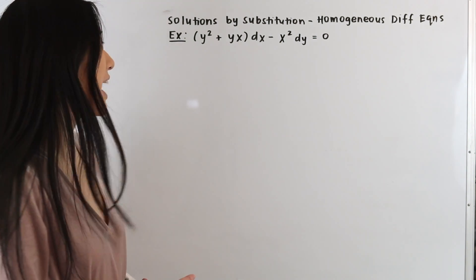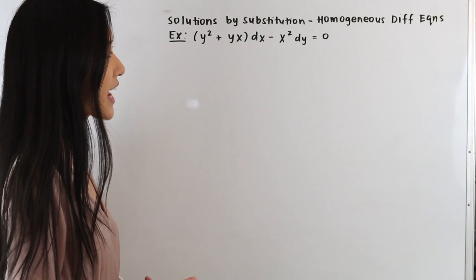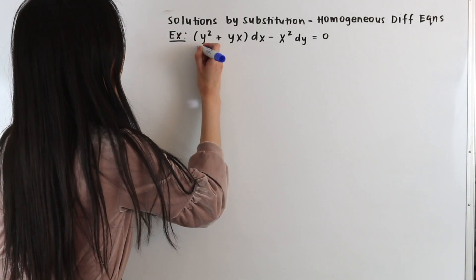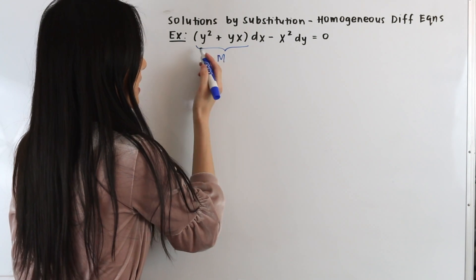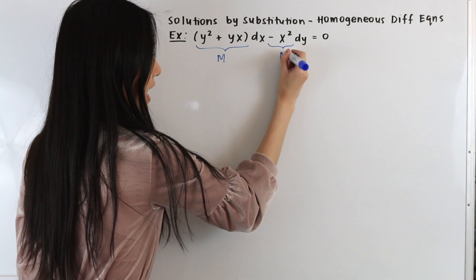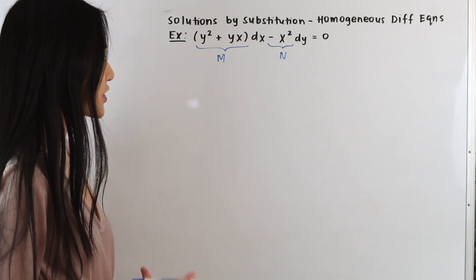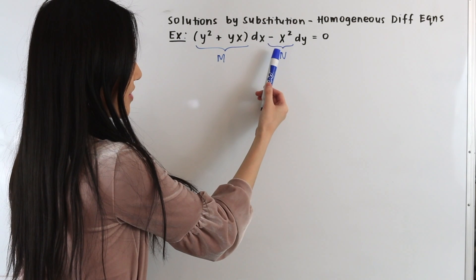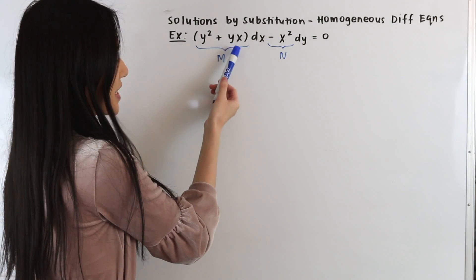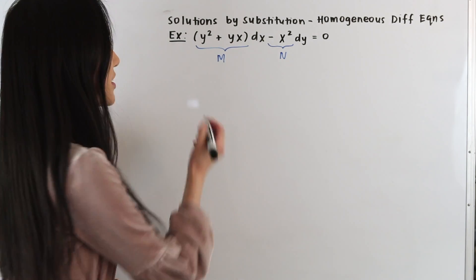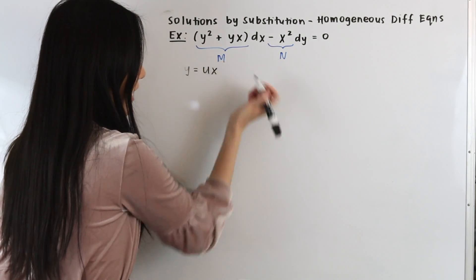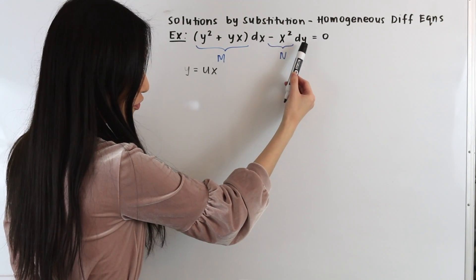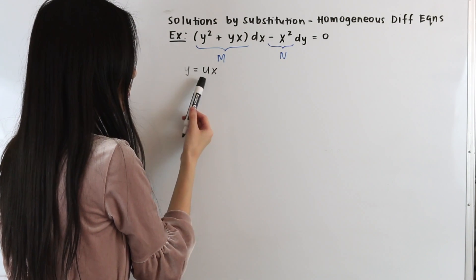Let's take a look at the first example. We have the quantity y squared plus y times x dx minus x squared dy equals zero. We identify M equals y squared plus yx, and N equals negative x squared. Out of these two functions, N is easier to integrate since it has only one term. So we are going to make the substitution y equals u times x, since N is being multiplied by the differential dy.